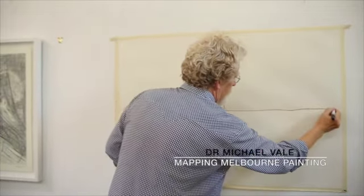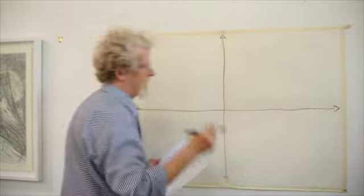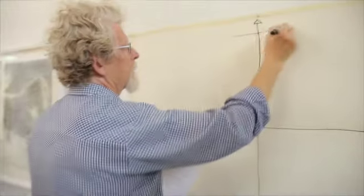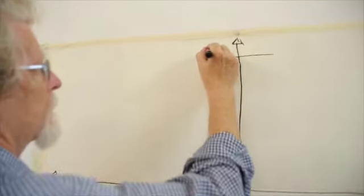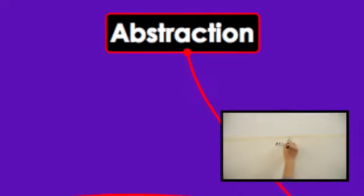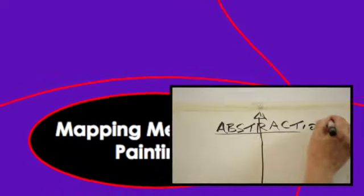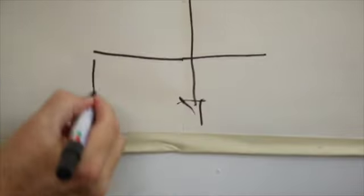Now obviously, this kind of analysis leaves out a lot of grey areas, so apologies in advance. What I'll do with the top area here is, this is abstraction, and down here is figuration.